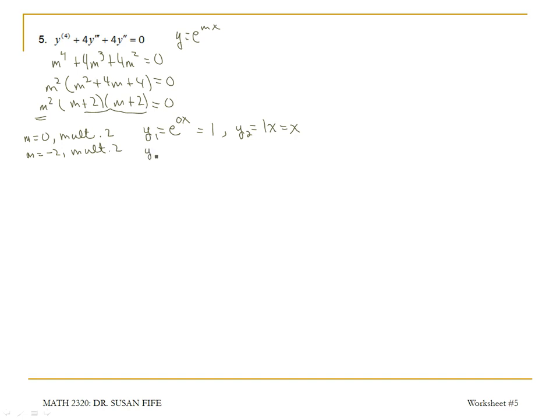My third solution comes from the fact that negative 2 is the solution to the characteristic equation. It gives me e to the negative 2x. And then my fourth solution, I would multiply e to the negative 2x by x because we had a repeated solution, x e to the negative 2x.